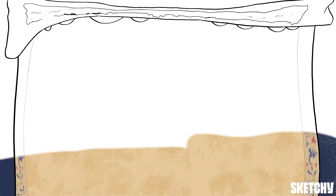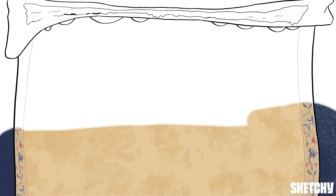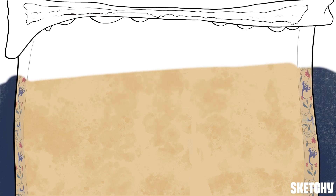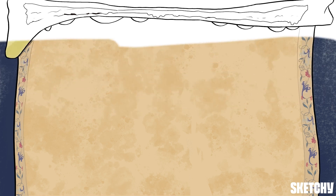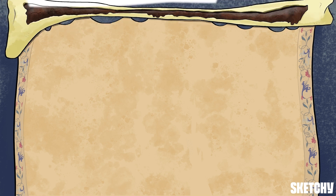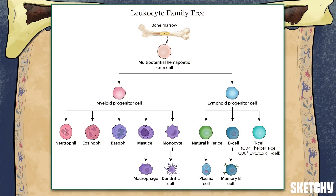Immunology can be kind of a pain in the ass for many students because it's really the definition of alphabet soup — IL-2, TNF-alpha, C3b — it's confusing. So in an effort to make this as painless as possible, we're going to start off nice and simple. We're going to introduce some key cells of the immune system and how they develop from their common stem cell precursor.